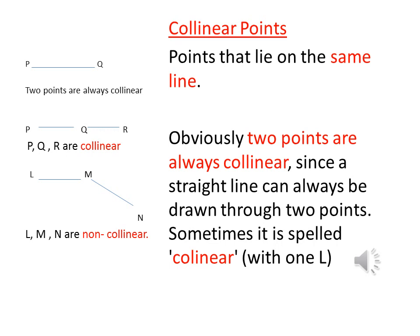One such group is called collinear points. When points are arranged in such a way that they all lie on the same line, then such points are called collinear points. If they don't lie on the same line, they are called non-collinear points. Two points are always collinear, as a straight line can always be drawn through any two given points. But if we take three points at a time, they may be collinear or non-collinear depending on whether they lie on the same line.